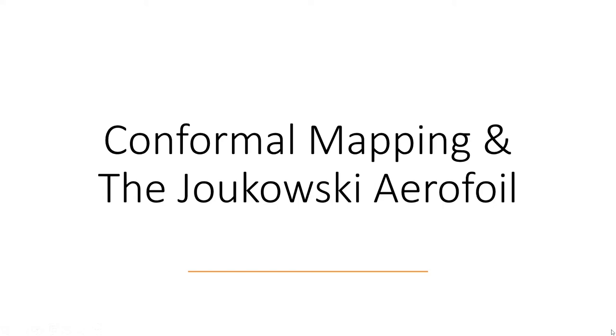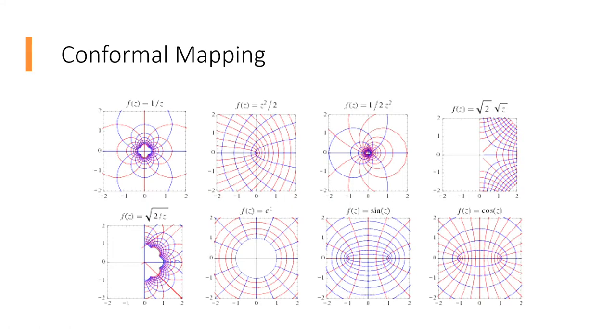Conformal mapping and the Joukowsky airfoil. In mathematics, a conformal map is a function that locally preserves angles but not necessarily lengths, meaning that although the shapes of minutely small figures are preserved, the image may have a new size and/or curvature.